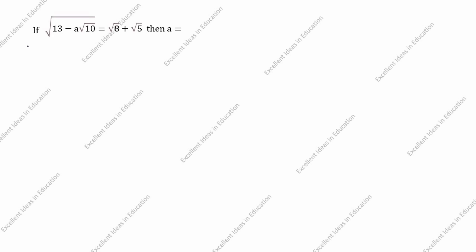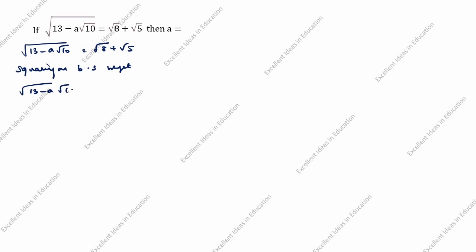What is given in this question? Root of 13 minus a root 10 equals root 8 plus root 5. Squaring on both sides, we get: root 13 minus a root 10, the whole square, equals root 8 plus root 5, the whole square.